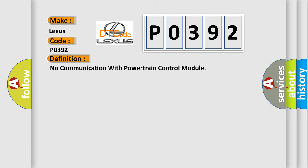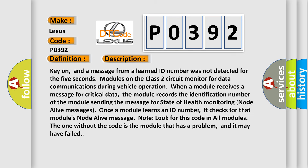And now this is a short description of this DTC code. Key on, and a message from a learned ID number was not detected for five seconds. Modules on the class 2 circuit monitor for data communications during vehicle operation. When a module receives a message for critical data, the module records the identification number of the module sending the message for state of health monitoring node alive messages.